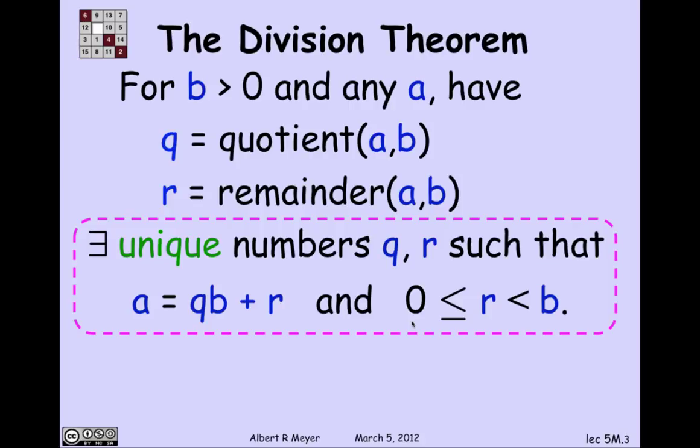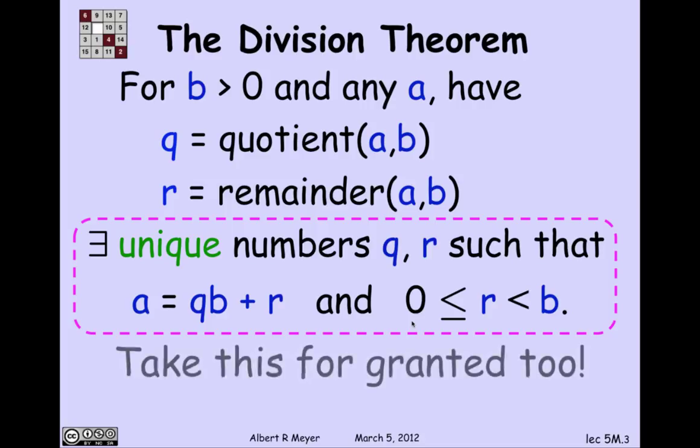And in fact, there's a unique quotient of A divided by B and this unique remainder of A divided by B where the remainder, what makes it unique is the remainder is constrained to be in the interval greater than or equal to 0 and less than the divisor B. So we're going to take this fact for granted too. Proving it is not worth thinking about too hard because it's one of those facts that's so elementary that it's hard to think of other things that would more legitimately prove it.